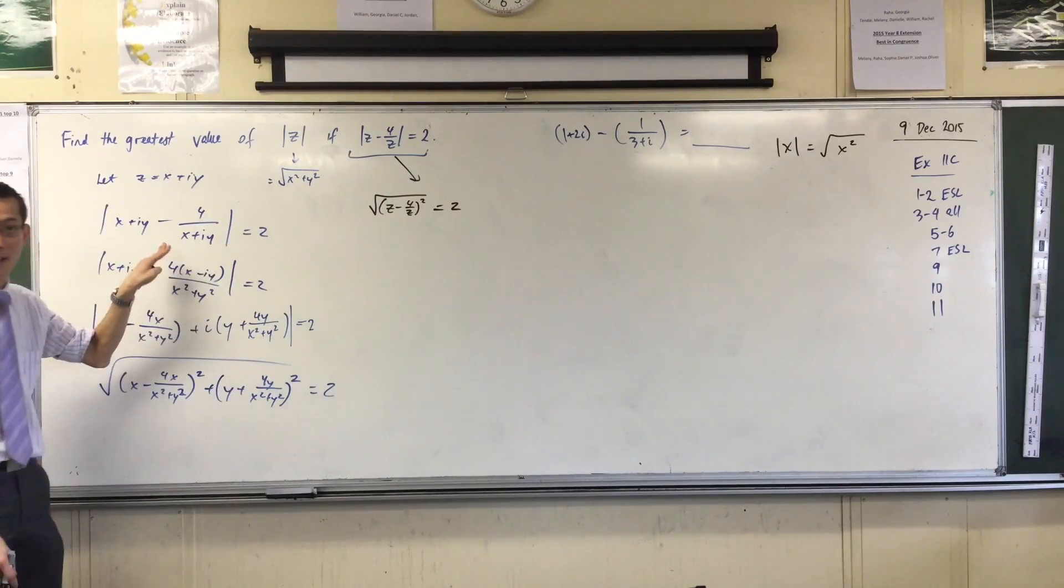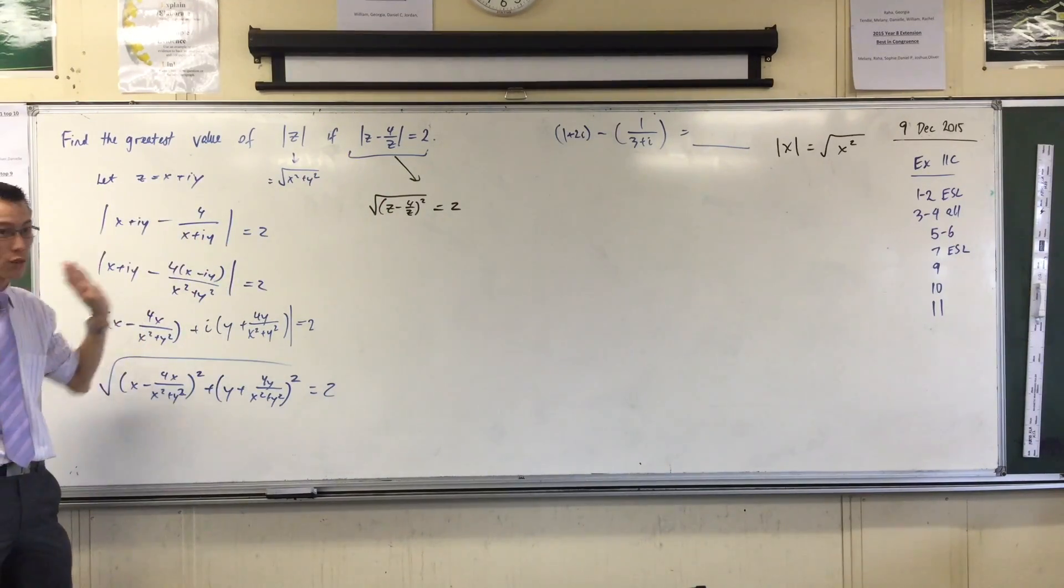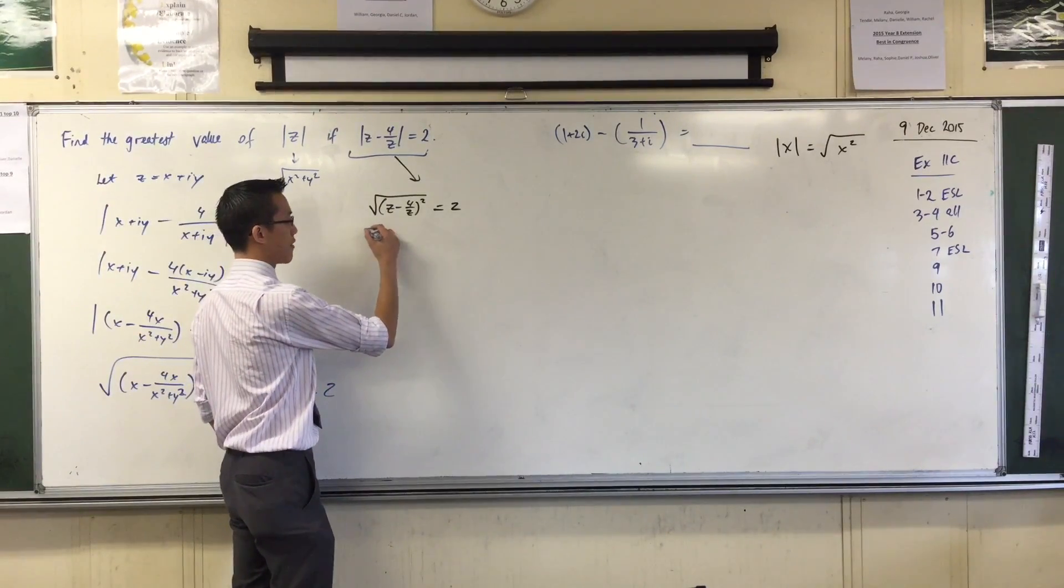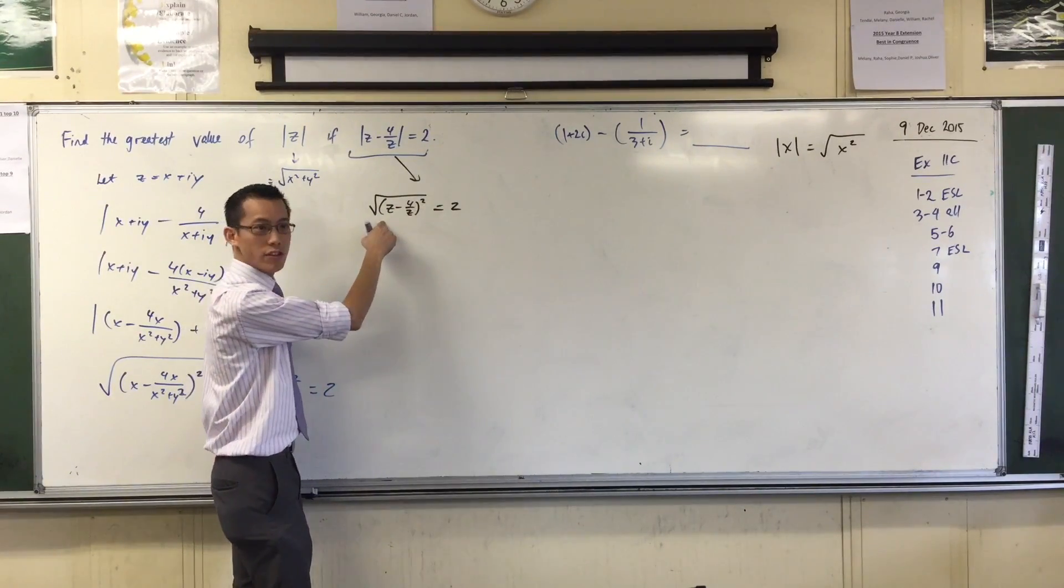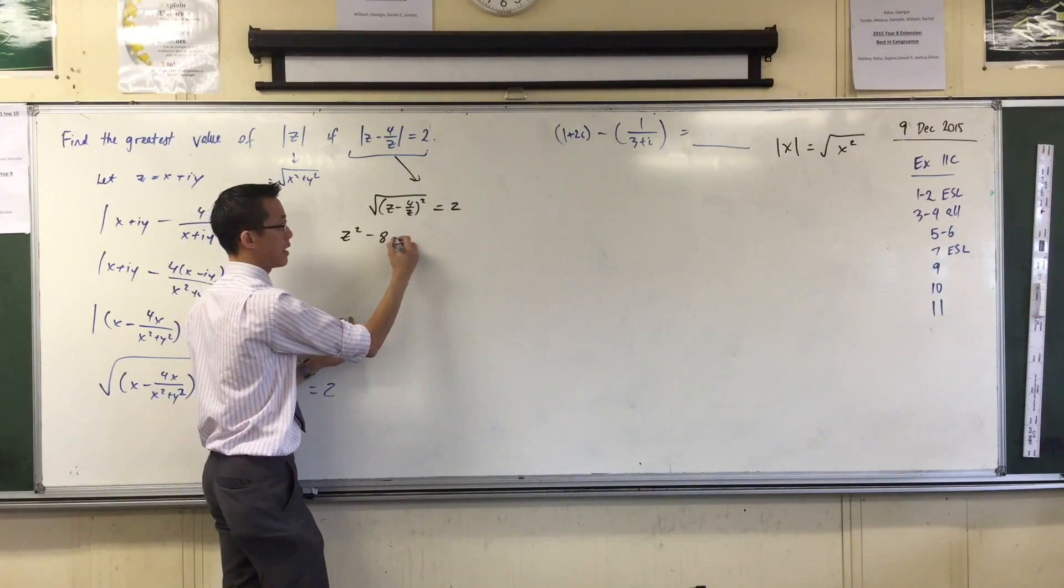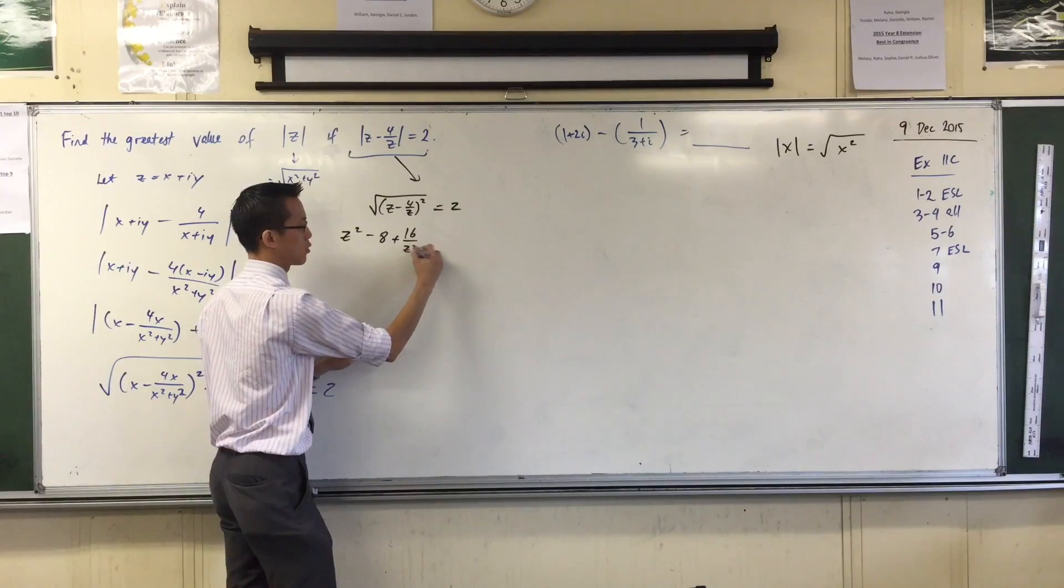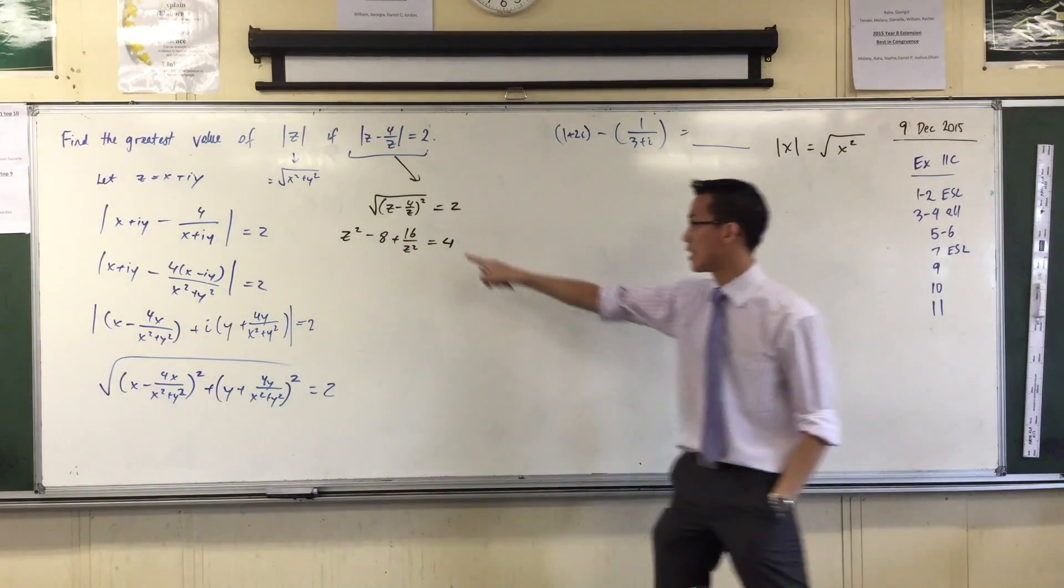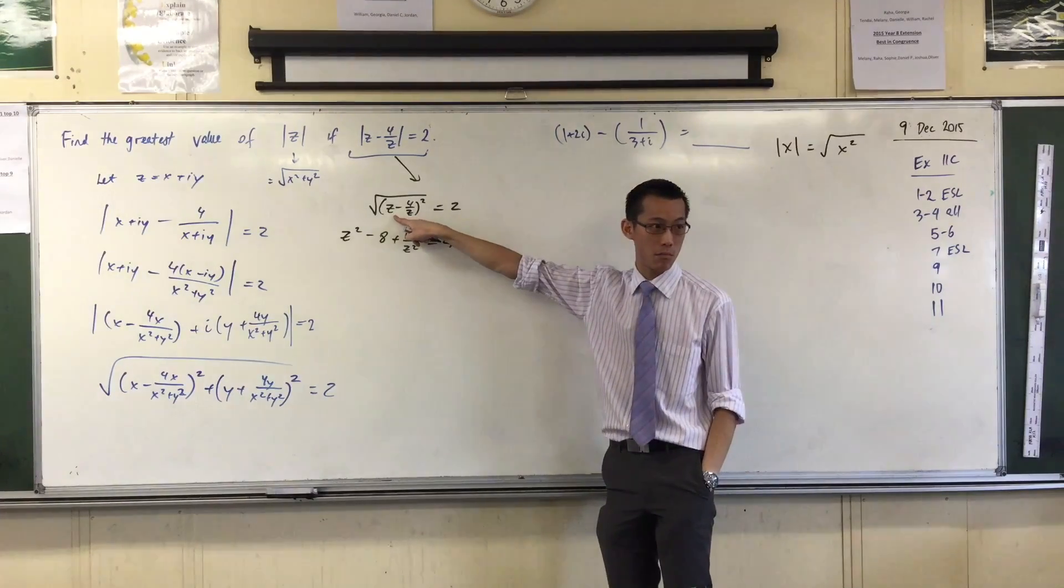That's equal to 2. Like, that's just what that says. But I've just taken a different path. I'm all in z's, I haven't thought about x and y's. I can deal with this. I'm going to square both sides so I get rid of the square root. So this looks to me like, I might as well expand this while I'm at it. z² - 8 + 16/z² equals 4. Are you happy with that? I squared both sides and while I was at it, I expanded that square in the middle.